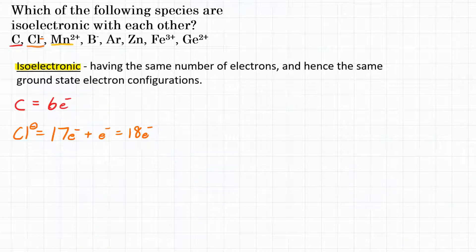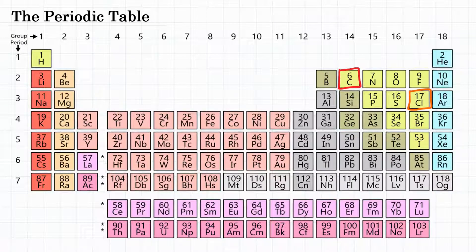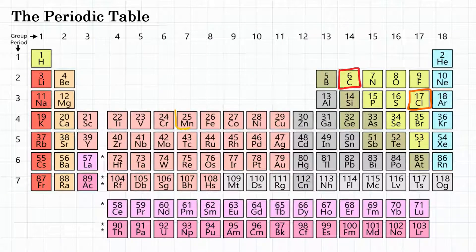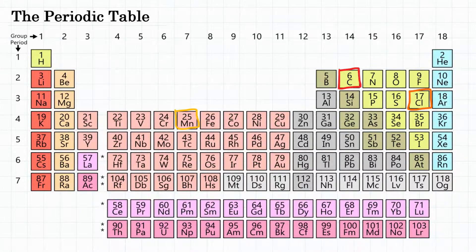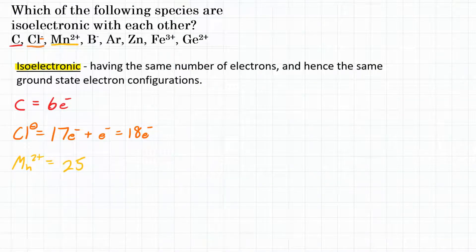Next up is manganese 2+. Mn 2+, looking at the periodic table, we find manganese right here, element number 25. So manganese has 25 electrons, but it is 2 positive. That means it has lost 2 of its normal electrons. So we're going to subtract 2 electrons, and that will give us 23 total electrons for manganese 2+.